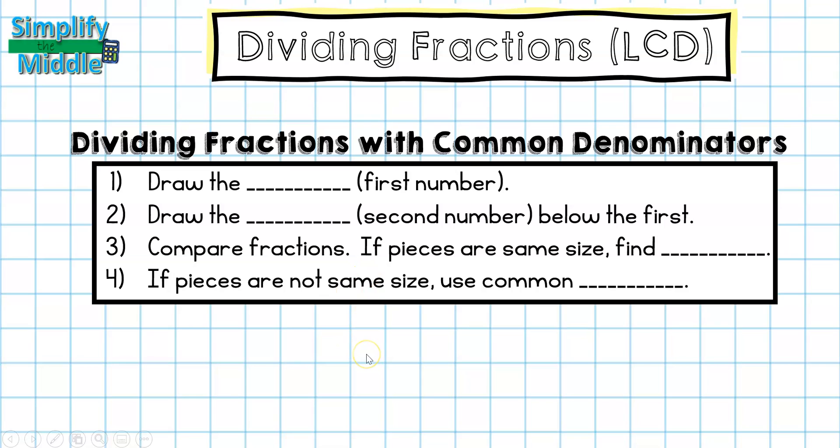When I'm dividing fractions with common denominators, I'll draw the first number which is my dividend, then I'll draw my second number below my first which is my divisor. I'll compare fractions, and if the pieces are the same size I can simply find my quotient using that information. If the pieces are not the same size, then first I would use a common denominator.